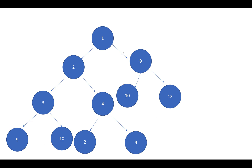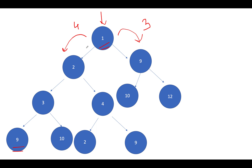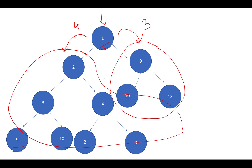Starting from the root node, we go in both directions — left and right — and calculate the height of the leftmost leaf node and the rightmost leaf node. In this example, the height of the leftmost leaf node is four, and the height of the rightmost leaf node is three. There is a mismatch between these two values.